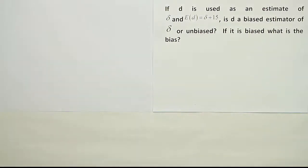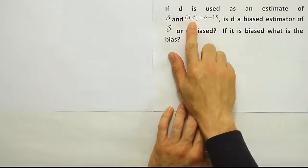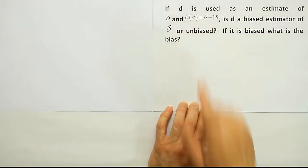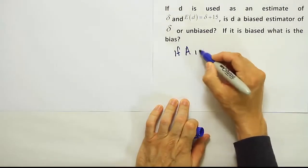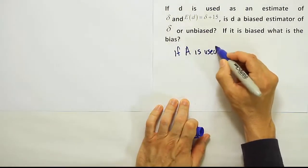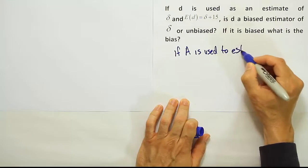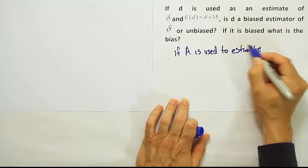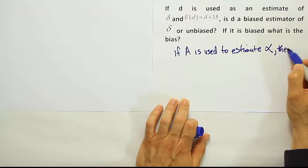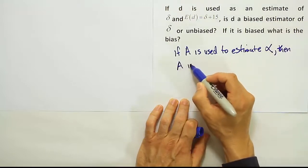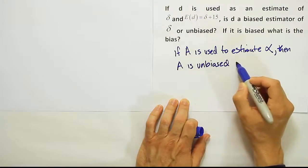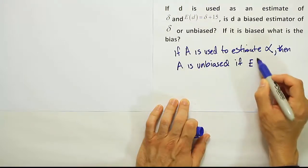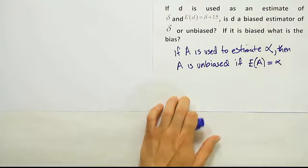Okay, so in order for an estimator to be unbiased, its expected value has to be equal to the thing it's trying to estimate. For example, if A is used to estimate alpha, then A is unbiased if the expected value of A is equal to alpha.